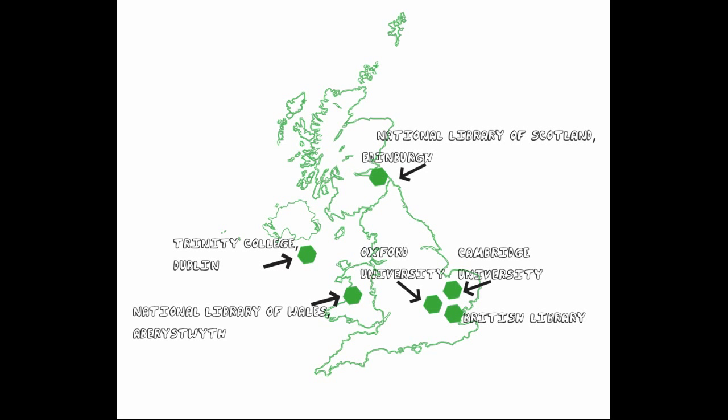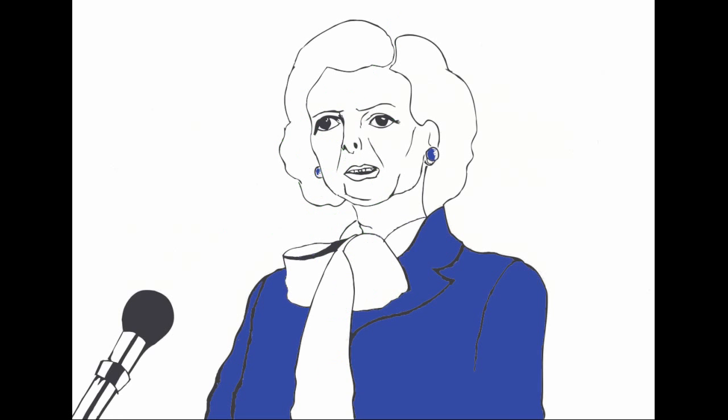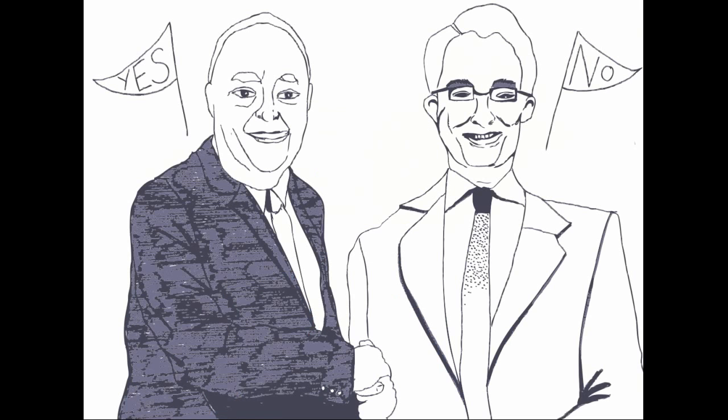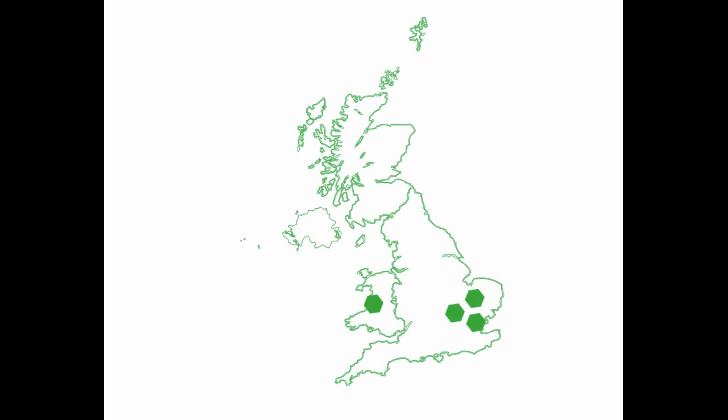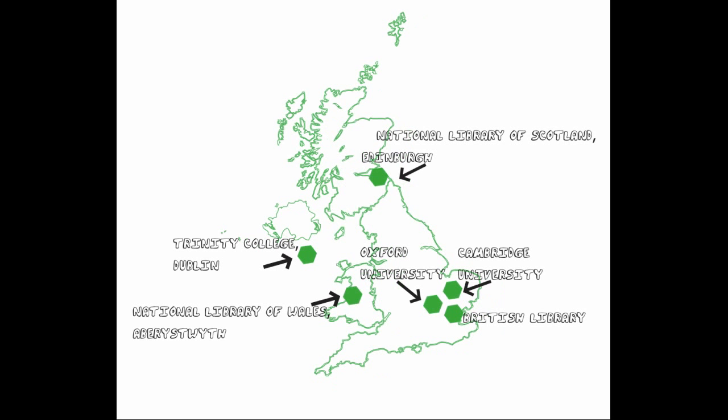This second archive already includes the death of Margaret Thatcher and the referendum on Scottish independence. Unfortunately, the legislation that gave the right to collect this information also made it only legal to access it inside a UK legal deposit library, so you will have to go to one of these libraries to use this web archive.